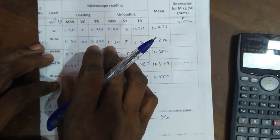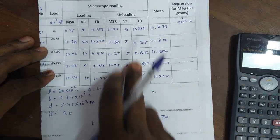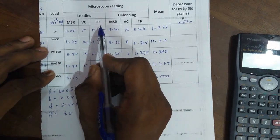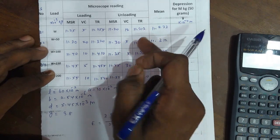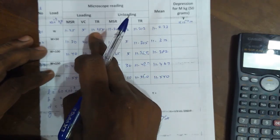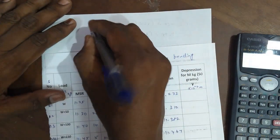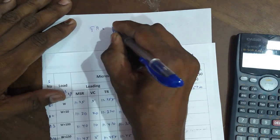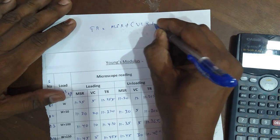You already calculated readings taken for loading values and unloading values. You got the total readings for loading and total readings for unloading values. You already know that the basic calculation is total reading. The total reading general formula is: TR total reading equals MSR main scale reading plus vernier coincidence into least count.